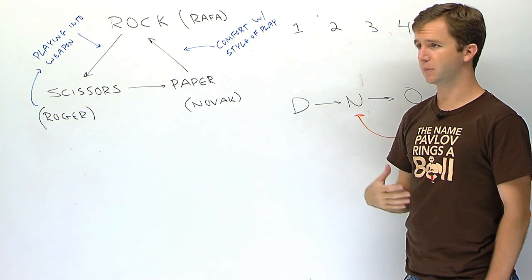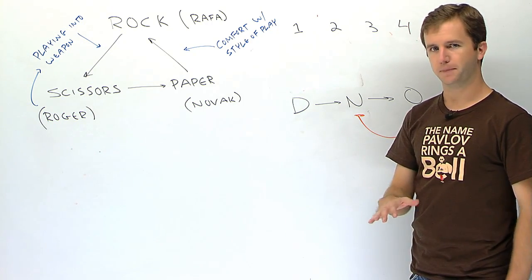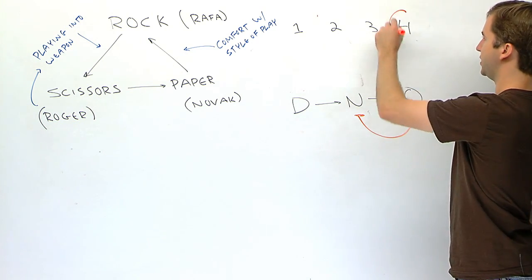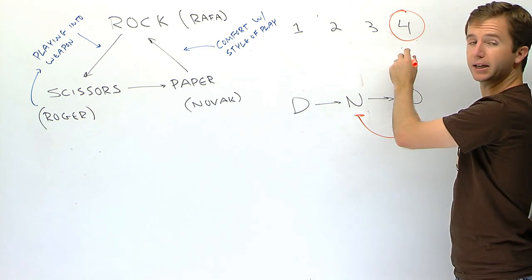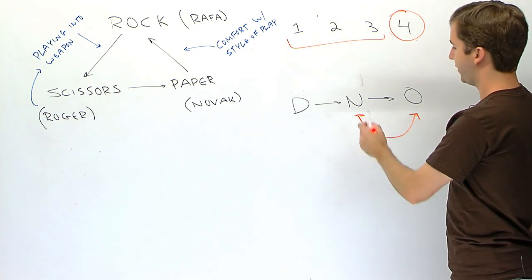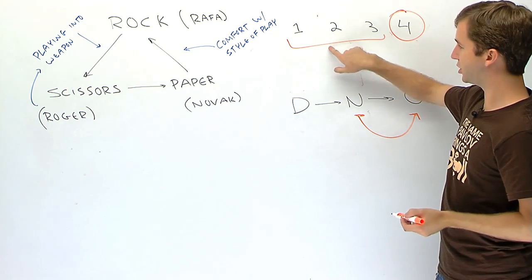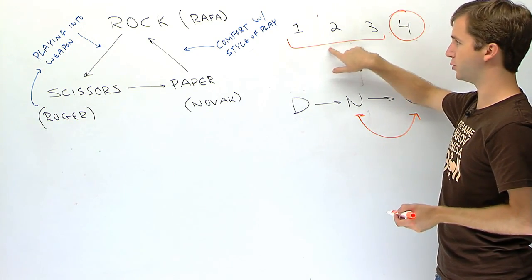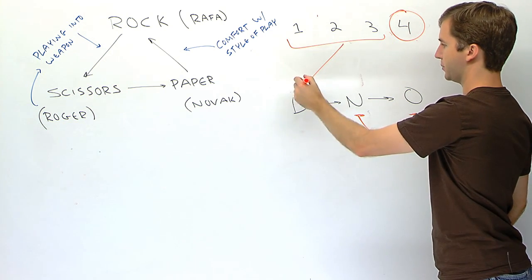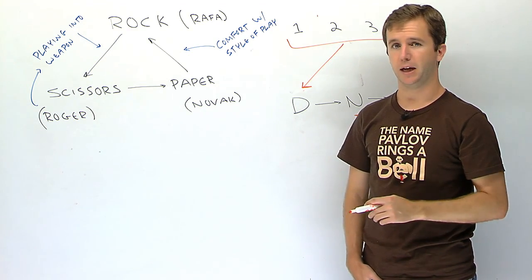I've kind of drawn this up here, you know, drawn one, two, three, four. Obviously your sequence could be fewer shots, more shots. When we talk about the sequences these guys are using, I've written two things here: playing into a weapon and comfort with style of play. In the case of Federer, his sequence to get on offense plays straight into Rafa's weapon. His sequence is he will go backhand to backhand with a righty, throwing some topspin, throwing some slice, and that will elicit a ball he can run around and hit inside out or inside in forehand.